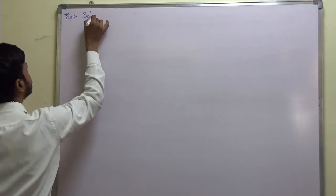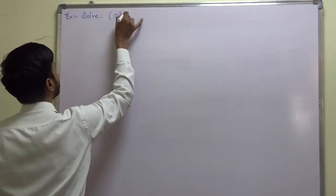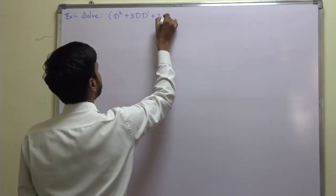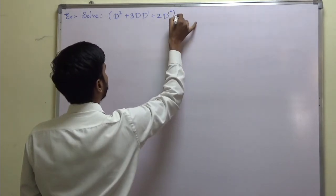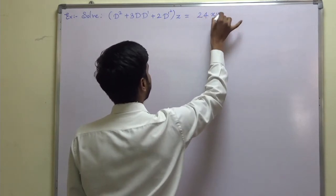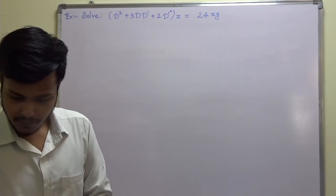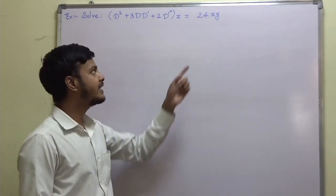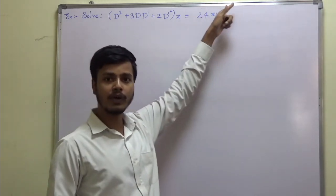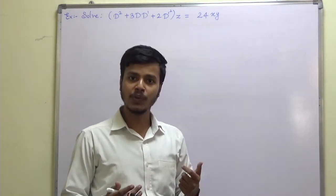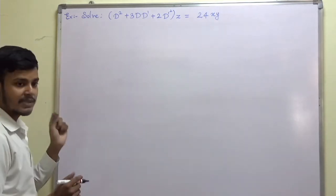Let me take an example. Solve: D-squared plus 3 D D-dash plus 2 D-dash-squared, operating on z, is equal to 24xy. As you can see on the right-hand side, we have x to the power 1 into y to the power 1, so obviously we are going to use rule number 3. Let us solve this problem.